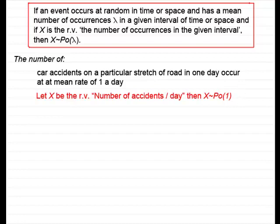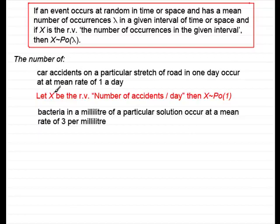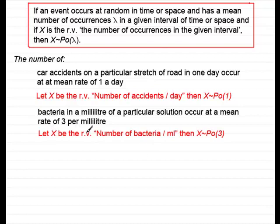Another example: the number of bacteria in a millilitre of a particular solution occur at a mean rate of 3 per millilitre. I've got a mean rate of three in an interval of space, that space is a volume, millilitres. So we could define this as following a Poisson distribution. Let X be the random variable, number of bacteria per millilitre, where X follows a Poisson distribution with mean three.